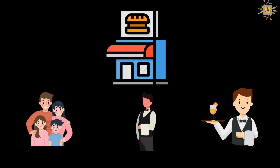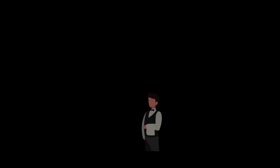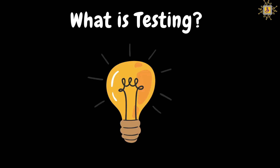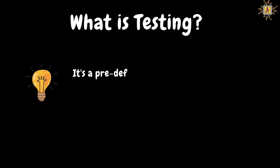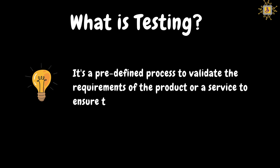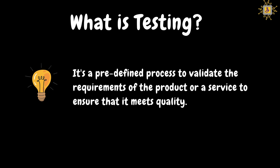Why did I tell you about the TV and restaurant examples? Are they related to testing? Yes, they are. These examples will help explain what testing is. Testing is a predefined process to validate the requirements of a product or service to ensure that it meets quality — confirming that the product or service meets expectations.